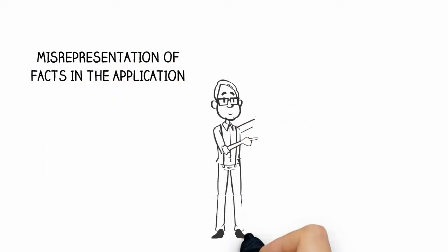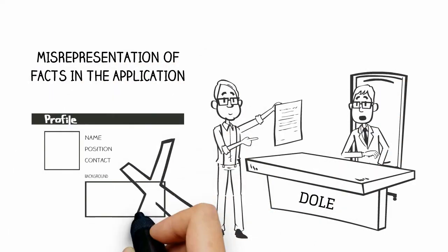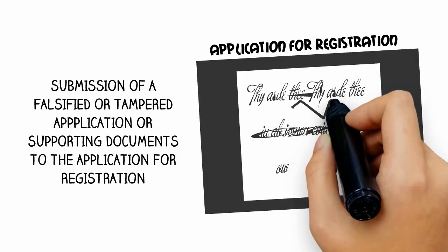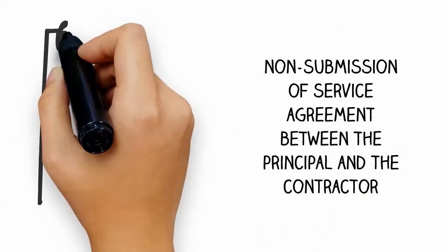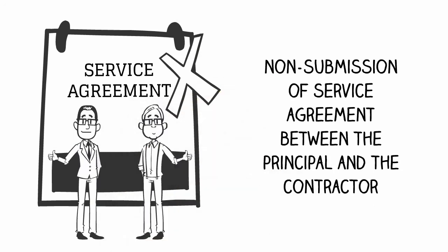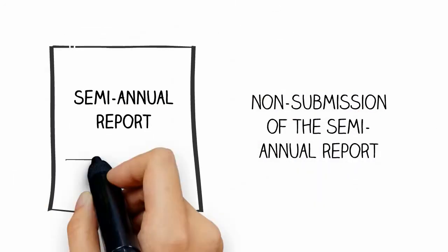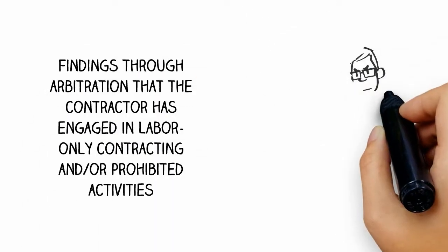The grounds for cancellation of registration are: misrepresentation of facts in the application; submission of a falsified or tampered application or supporting documents to the application for registration; and non-submission of the service agreement between the principal and the subcontractor when required to do so.